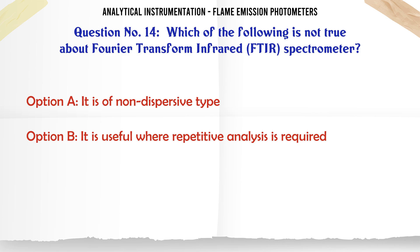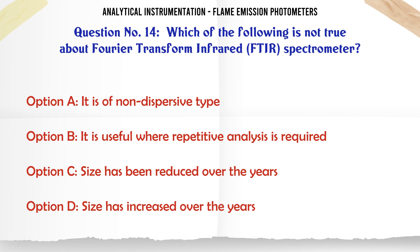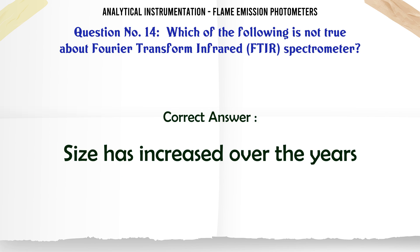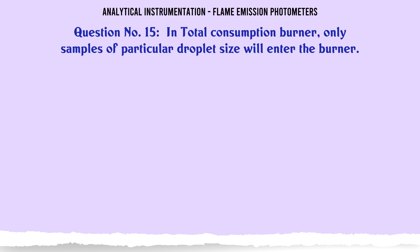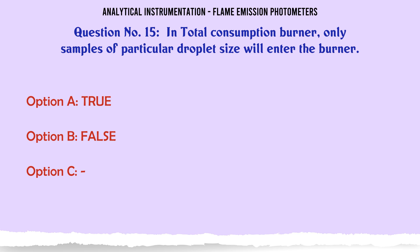Which of the following is not true about Fourier transform infrared (FTIR) spectrometer? A. It is of non-dispersive type. B. It is useful where repetitive analysis is required. C. Size has been reduced over the years. D. Size has increased over the years. The correct answer is: Size has increased over the years.